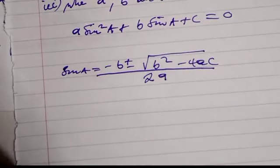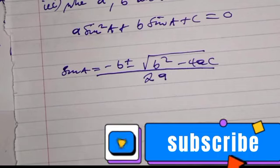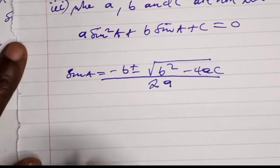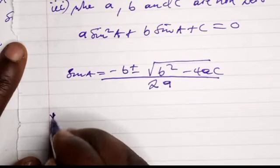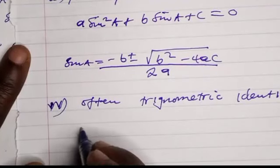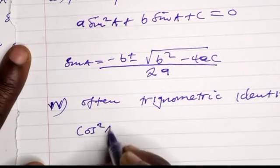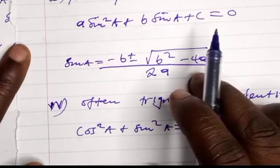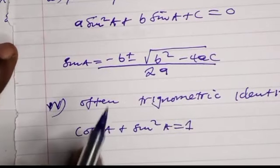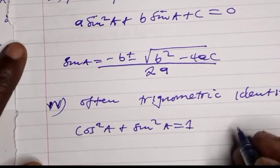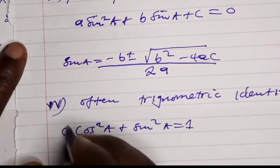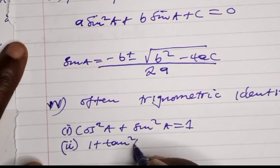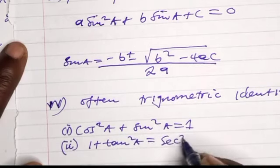This is an introduction to trigonometry equations. There are some identities we normally use. Identity number one: cos²(A) + sin²(A) = 1. Identity number two: 1 + tan²(A) = sec²(A).